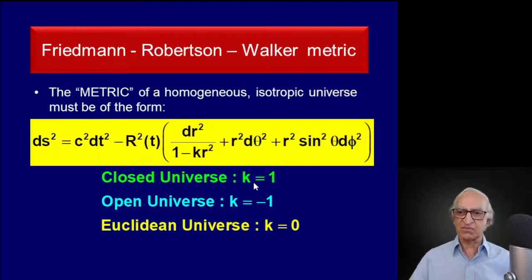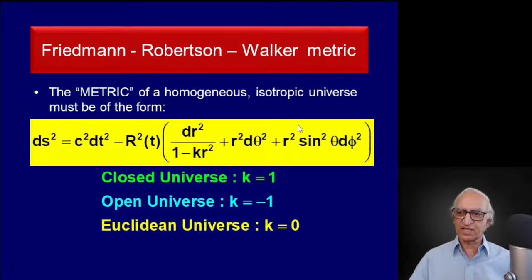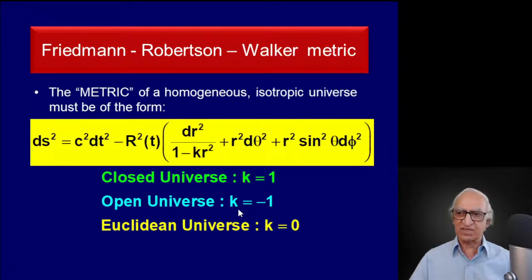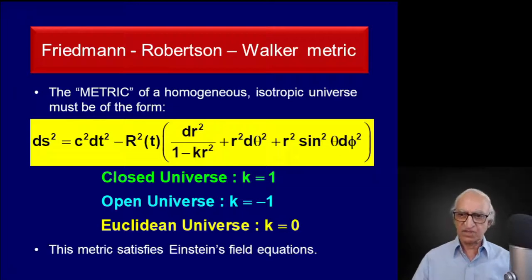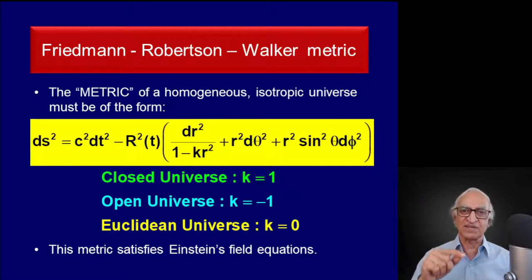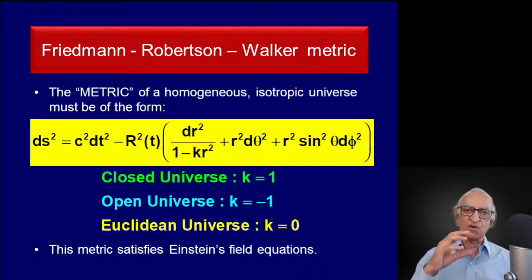There are three possibilities: a closed universe corresponds to k = +1; an open universe with negative curvature corresponds to k = -1; and a Euclidean universe corresponds to k = 0. The important thing to appreciate is that this metric satisfies Einstein's field equation — that is, the solution of Einstein's field equation for a homogeneous isotropic space yields exactly this metric.